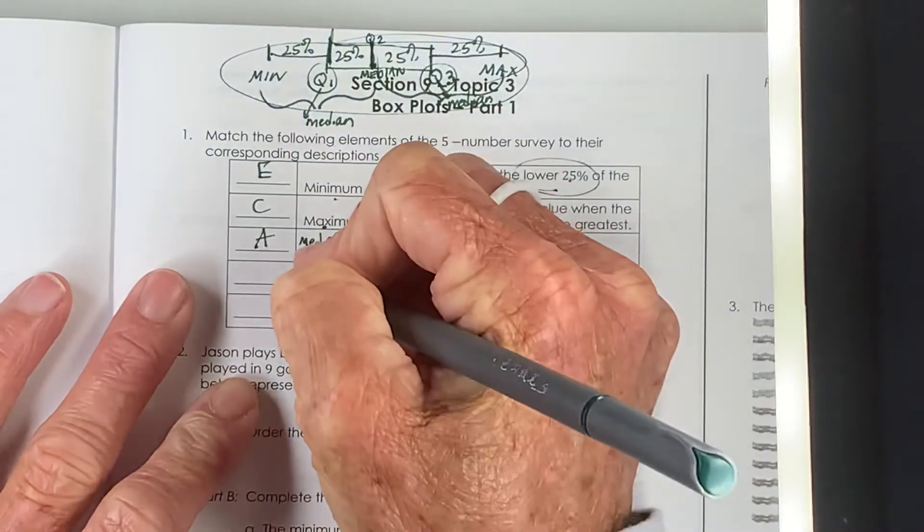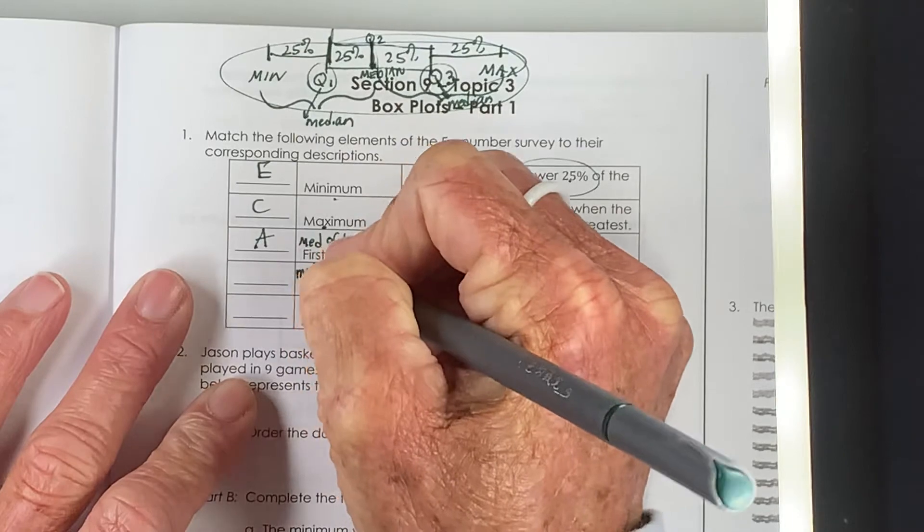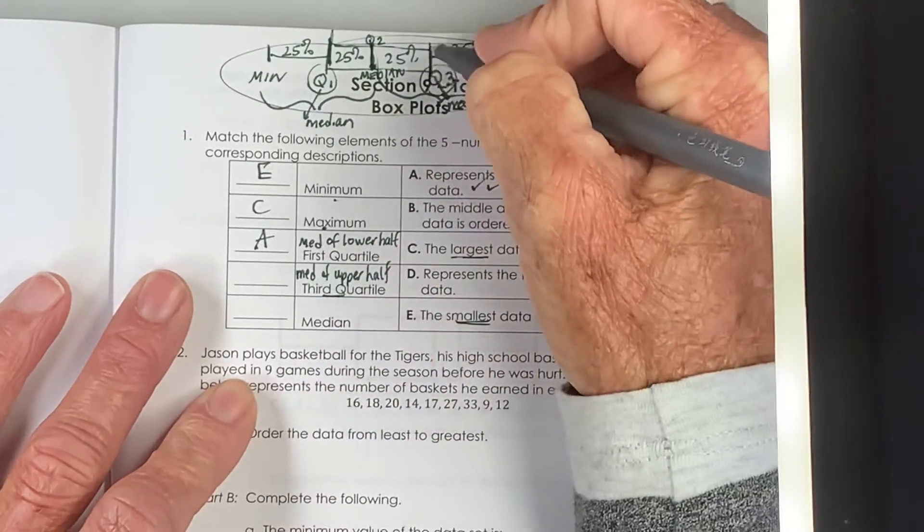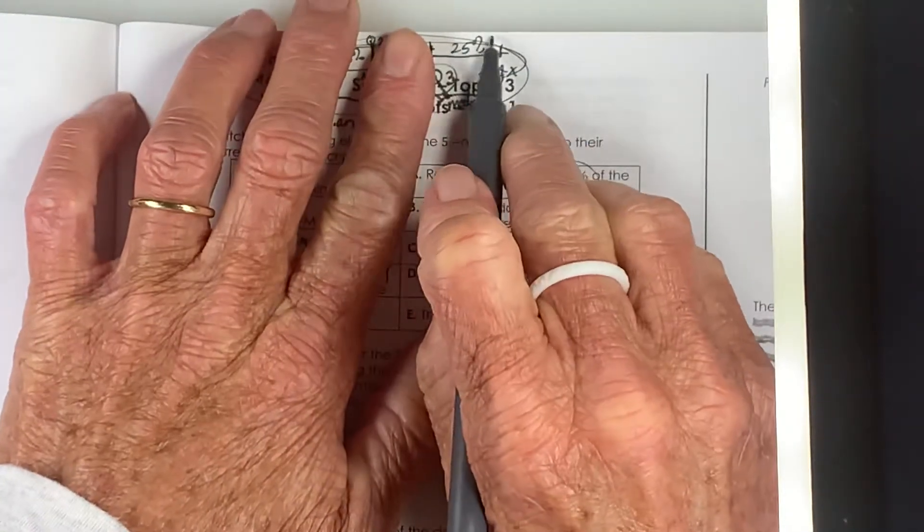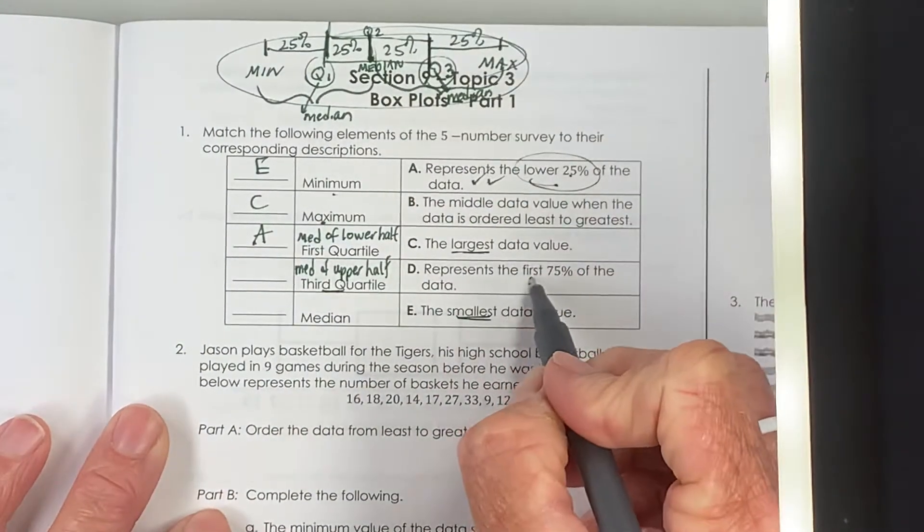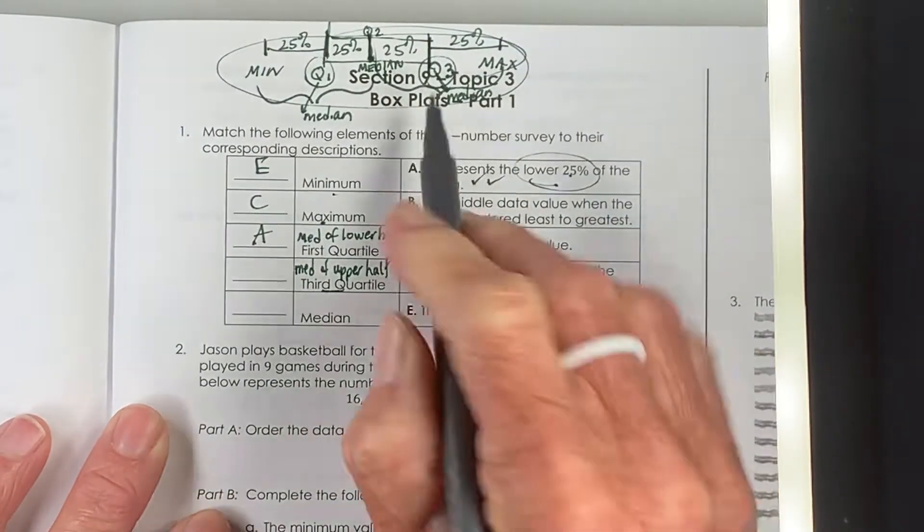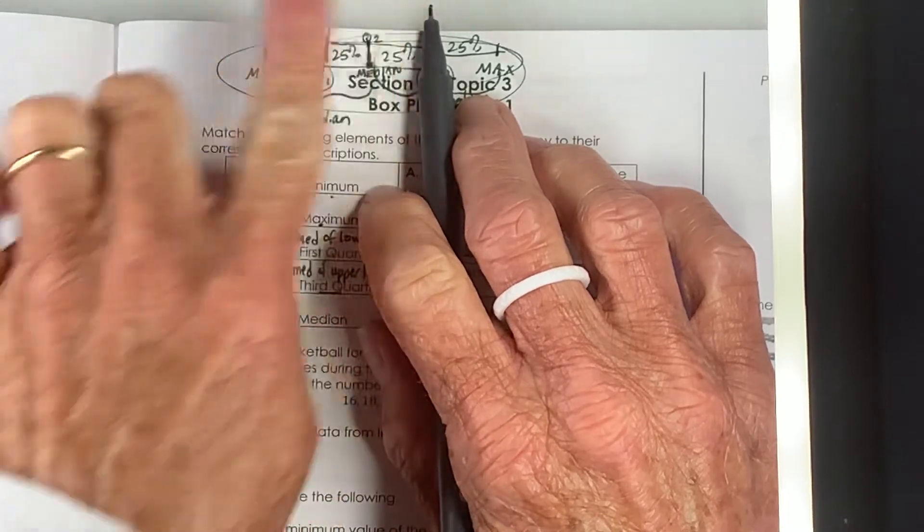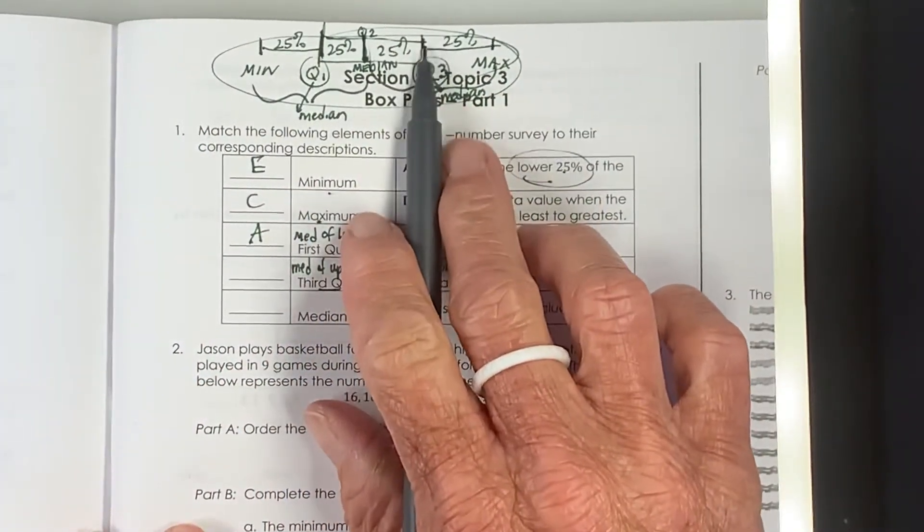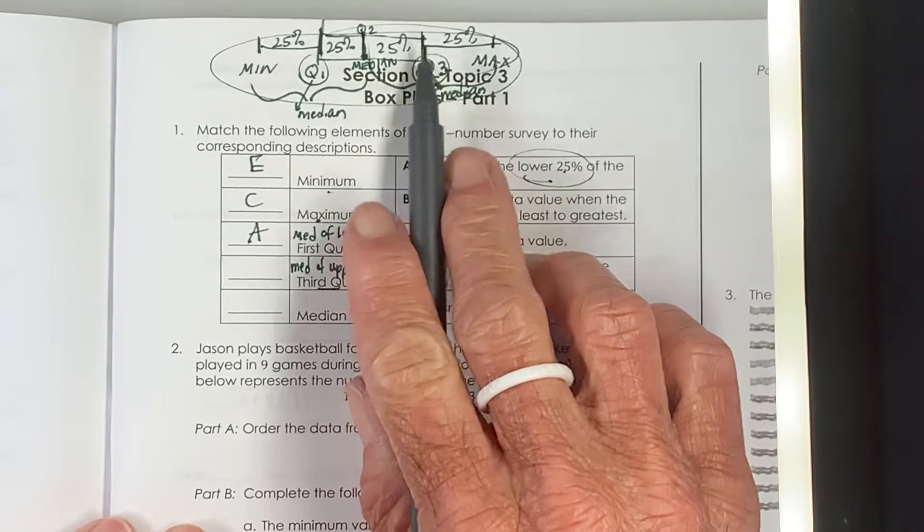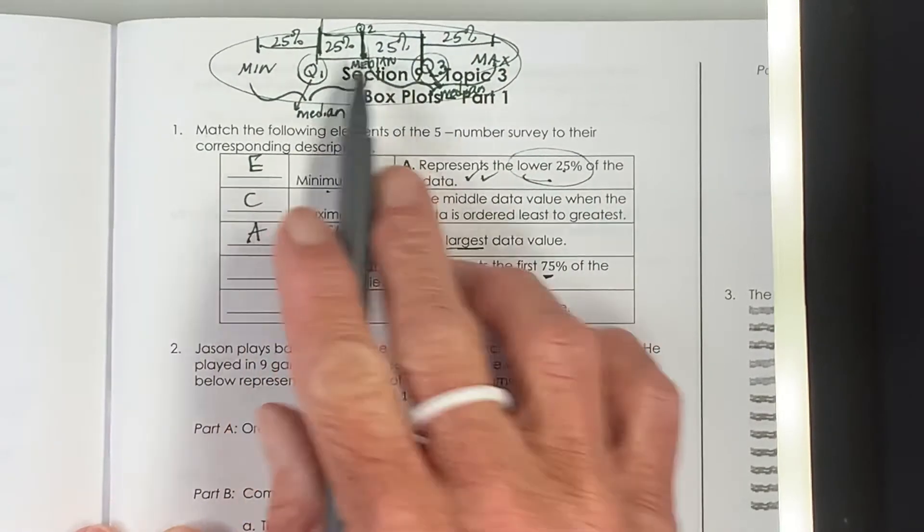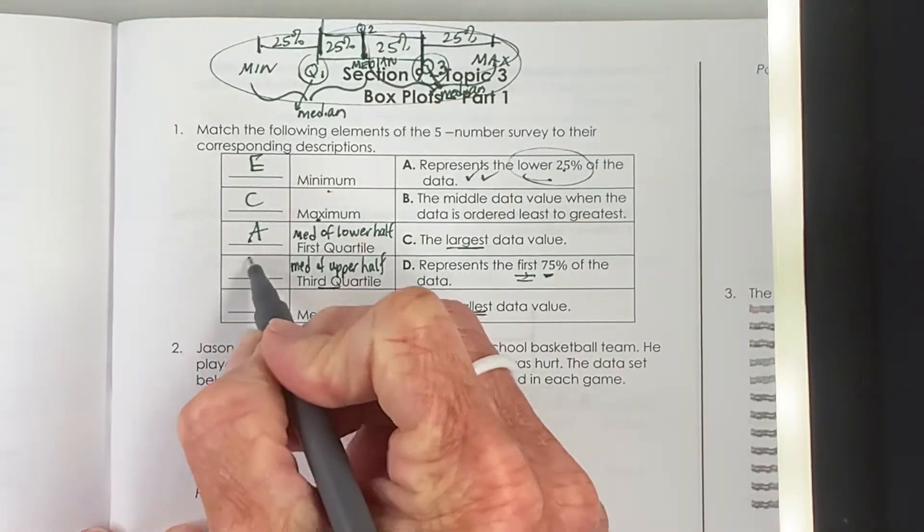Likewise, the third quartile is the median of the upper half. So this is our third quartile. 25% of the data is above it, 75% of the data is below it. It represents the first 75th percentile. So 25, 50, 75. By the time we've gone through that much data, we've made our way to quartile three. We also refer to it sometimes as the 75th percentile. This would be the 25th percentile, the 50th percentile. So that's D.